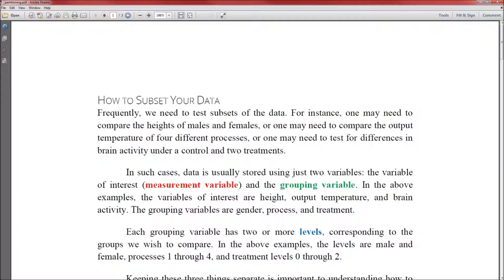In the above examples, the variables of interest are height, output temperature, and brain activity. And the grouping variables are gender, process, and treatment.